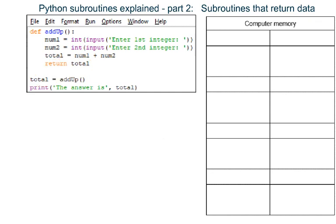Watch carefully so you understand why this new program works. The first thing that happens is Python makes a variable named total which is ready to store something in. I've labelled this one in green to make it stand out.